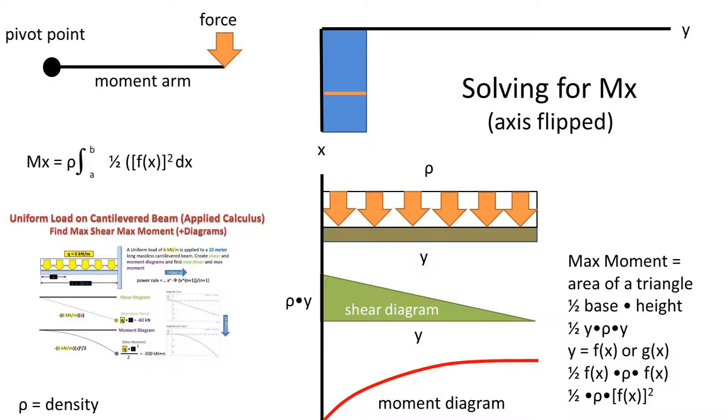So recall in calculus that we are interested in how this value changes between two points, b and a in this case. So we can integrate this max moment formula with respect to x to get the moment of any shape that can be defined by a function.